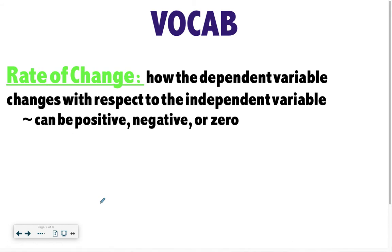Let's start by talking about what rate of change is. Rate of change is how the dependent variable, remember the dependent variable is y, changes with respect to the independent variable, which is x. So basically this is saying how does x impact y? That is our rate of change. And our rate of change can be positive, it can be negative, and it can be zero.